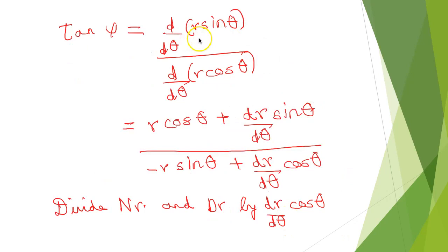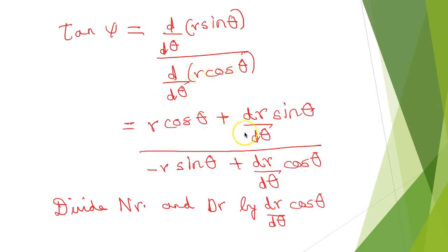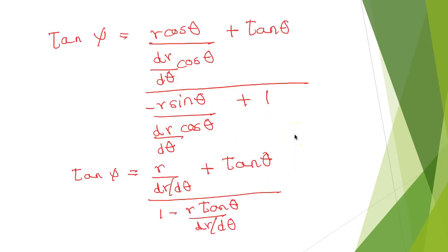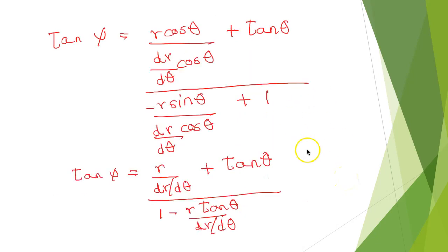So tan ψ = d/dθ(r sin θ) divided by d/dθ(r cos θ). Applying the product rule, the numerator is r cos θ + sin θ (dr/dθ), and the denominator is −r sin θ + cos θ (dr/dθ). We then divide numerator and denominator by (dr/dθ) cos θ, so that dr/dθ sin θ divided by dr/dθ cos θ gives tan θ, and the remaining term in the denominator gives +1.